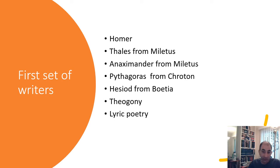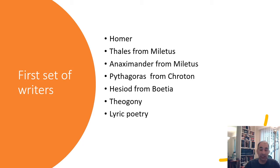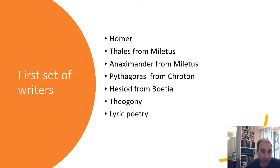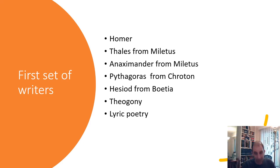For example, Thales was able to predict eclipses on a regular basis, showing he understood astronomy quite well. He was also able to calculate the heights of the pyramids in Egypt, demonstrating strong mathematical understanding. But his biggest claim to fame is that he understood the idea of elements. When we think of elements today we think of the periodic table, but for Thales these were more basic things like fire, earth, water, and air - and he believed water was the key element.